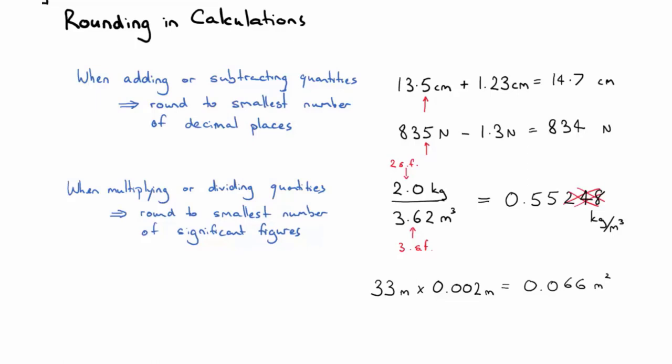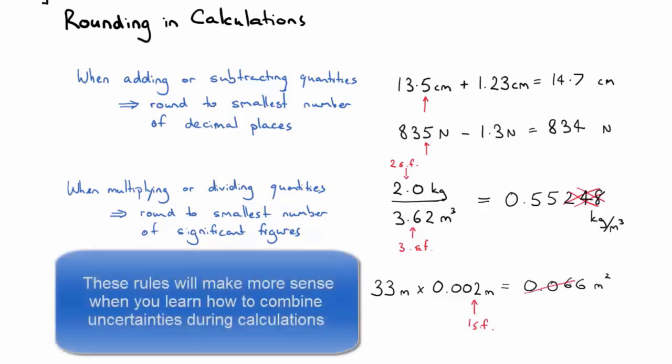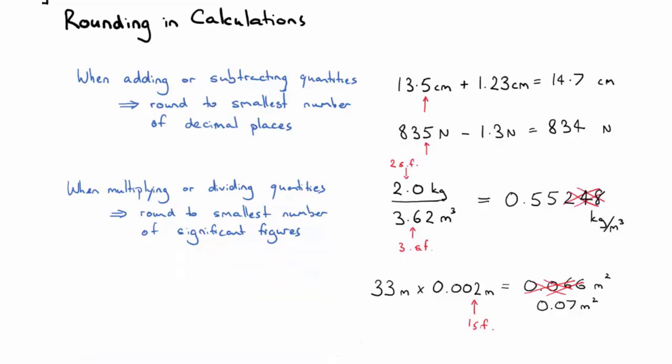But of course, this 0.002 only has one significant figure, whereas the 33 has 2. So we need to round our final answer to 0.07. And so by doing that rounding, we make sure that our final answer is not too precise or inappropriately rounded, given the original quantities that we needed to do that calculation.